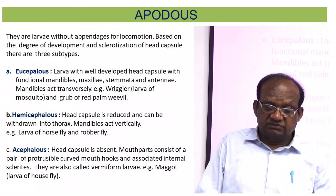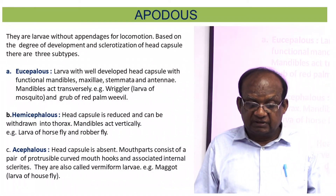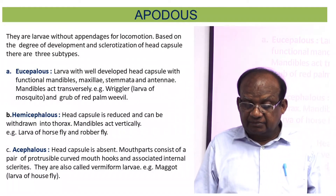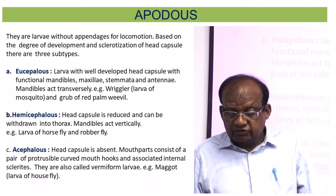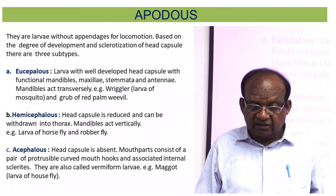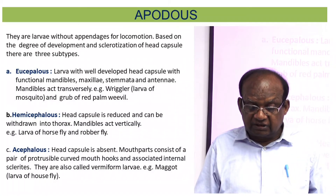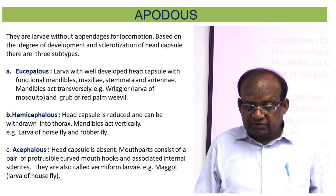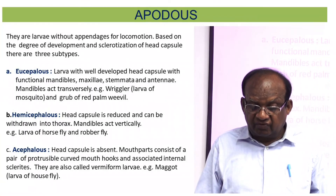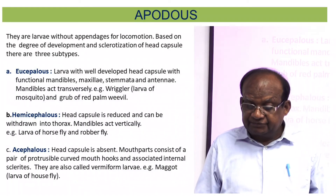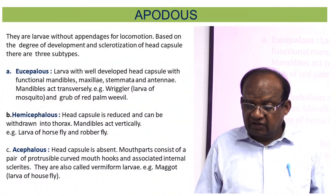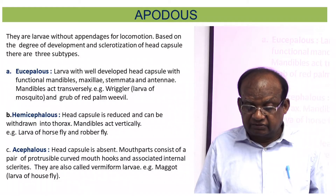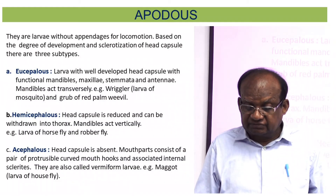The third category of apodous larvae is acephalous, where the head capsule is absent. Mouthparts consist of a pair of curved mouth hooks and associated internal structures. These are also called vermiform larvae because they look like a worm. An example is the larva of the house fly. Larvae of dipterous insects are known as maggots.